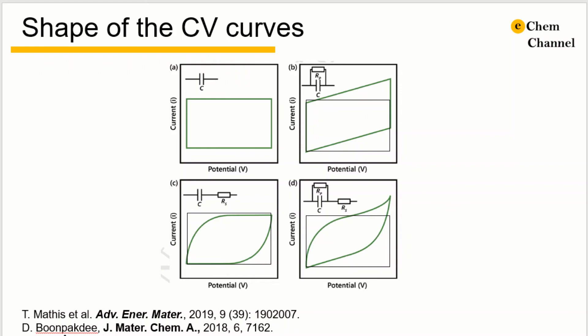Boonpakdee and his colleagues have suggested a way to interpret this kind of differences by building physical equivalent circuits composed of capacitive and resistive elements. A blunt CV curve indicates there is an equivalent series resistance here. A slant CV curve is due to equivalent parallel resistance. And a blunt and slanted CV curve is due to the existence of both elements.